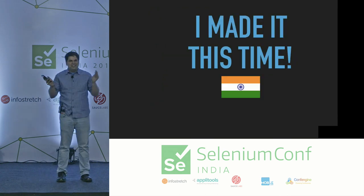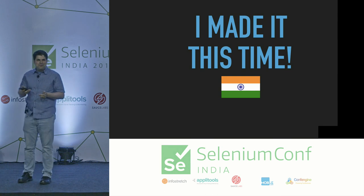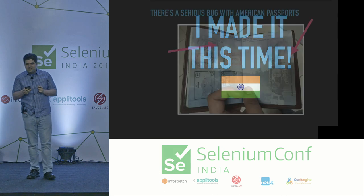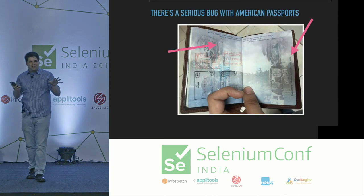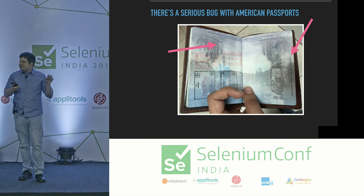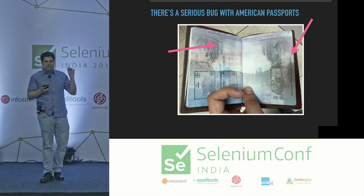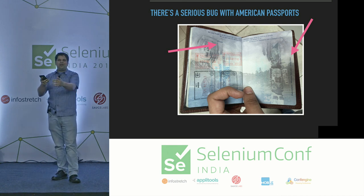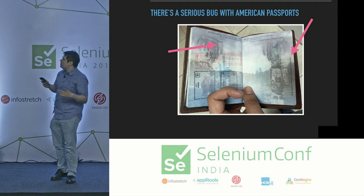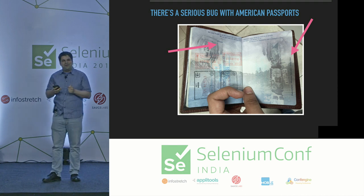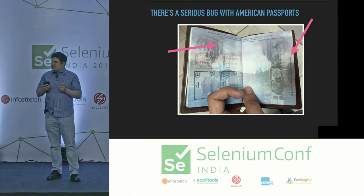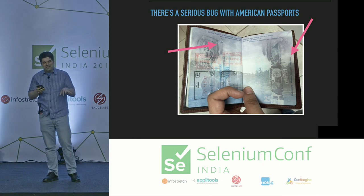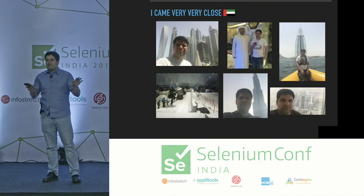I made it this time — I'm here. Through no small miracle, I am here. Apologies for what happened last year. There's a serious bug with American passports. You may notice the word 'Visas' written on the top left of certain pages. But on that blank, empty page where an Indian visa stamp would look really nice — it doesn't have that word written. Apparently, this actually matters.